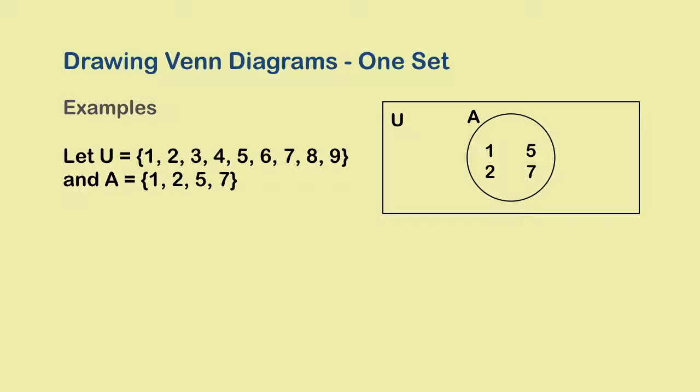And now the universal set represented by the rectangular region. This region already contains the region of set A, and therefore it already contains the elements that set A has. So we need to add only the remaining ones: 3, 4, 6, 8 and 9. As you can see, we put these elements outside the circle because these elements are not contained in the set A. And the circle will contain only those elements which do belong to set A. And that completes this Venn diagram.